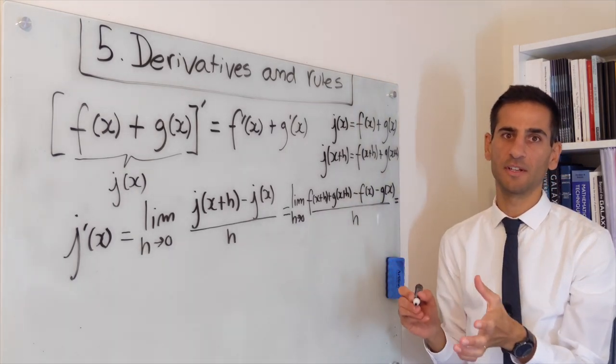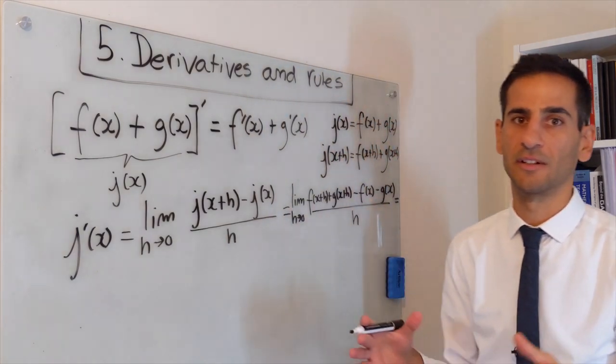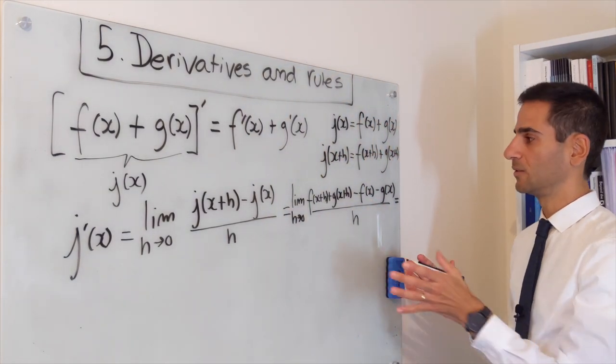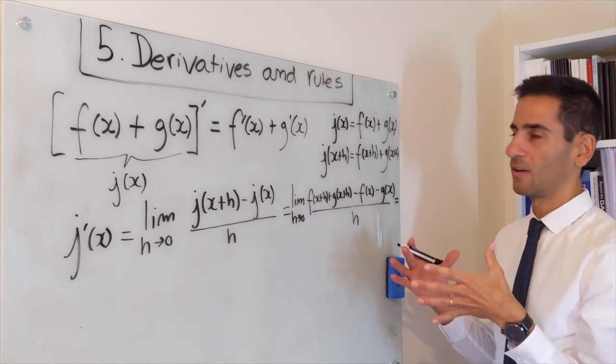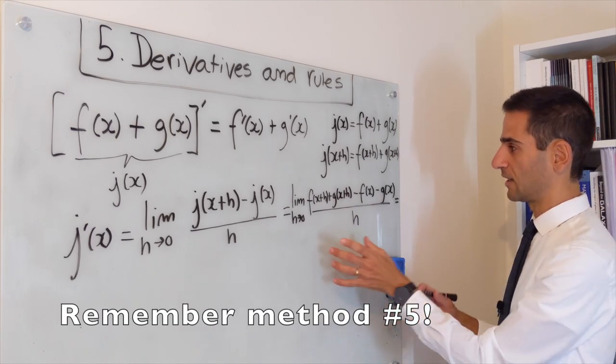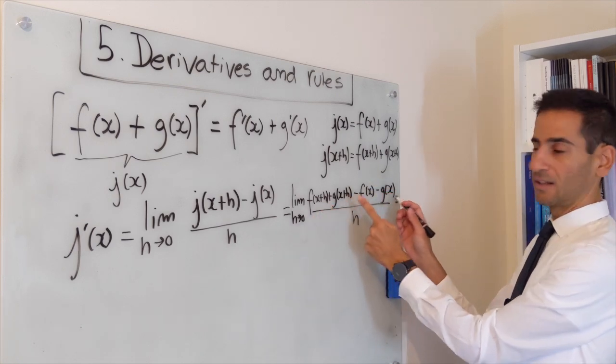So typically in these demonstrations, this is the simplest one, it's very easy, there's not a lot of manipulation going on, but what you want to do is to re-express this into something that you can recognize. In this case, what we're going to do is to group the terms, put the f's together and the g's together.